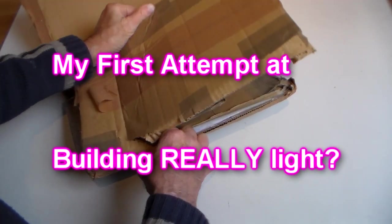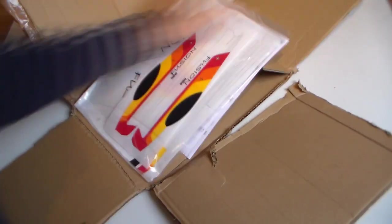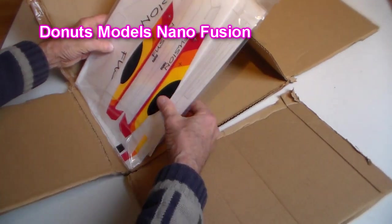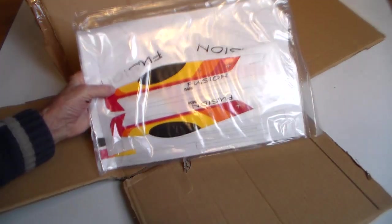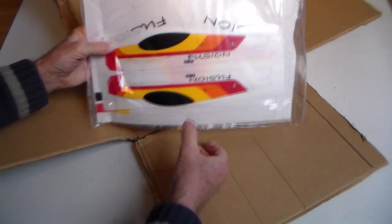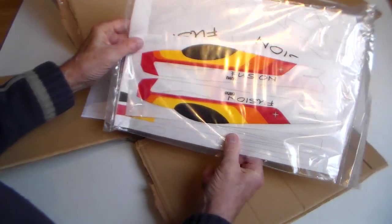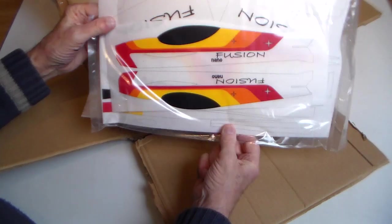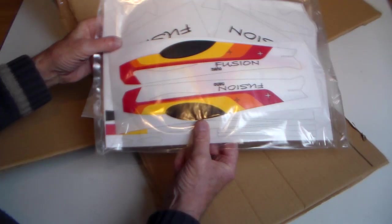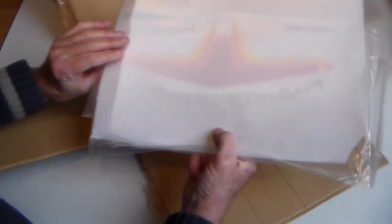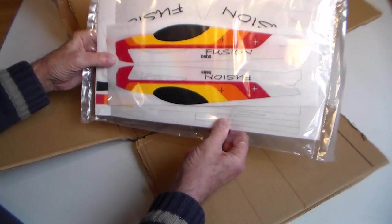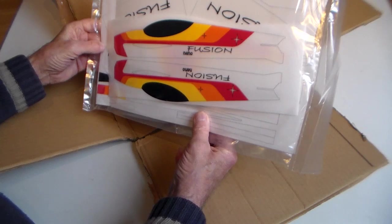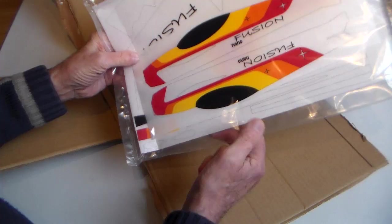I'm staying on the lightweight theme with another foamy. This is the Doughnuts Models Nano Fusion. I didn't quite know what to expect. I've seen online that all you get is the foam, and I must admit all you get is very lightweight foam and no instructions whatsoever. It says it's for experienced modelers.